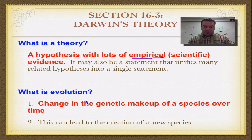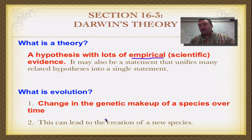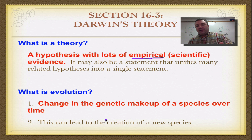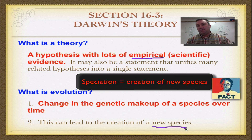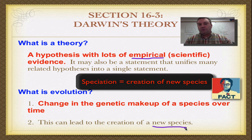Evolution, as we had on an earlier podcast, is a change in the genetic makeup of a species over time. What you're doing is seeing the genes change in a certain set of organisms over time, and it can actually lead to a series of new species. We're going to learn the mechanisms of how species are created when we get to our Evolution 2 series of screencasts.